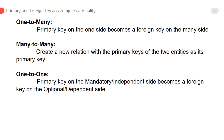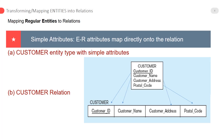In a one-to-one relationship, the primary key on the mandatory independent side becomes a foreign key on the optional dependent side. So in a one-to-one relation, the primary key is always on the mandatory side and the foreign key is on the optional side. In upcoming lectures you will understand this more clearly.